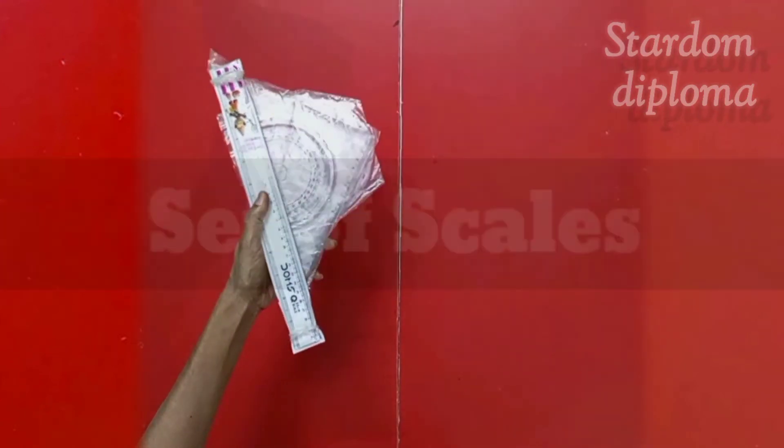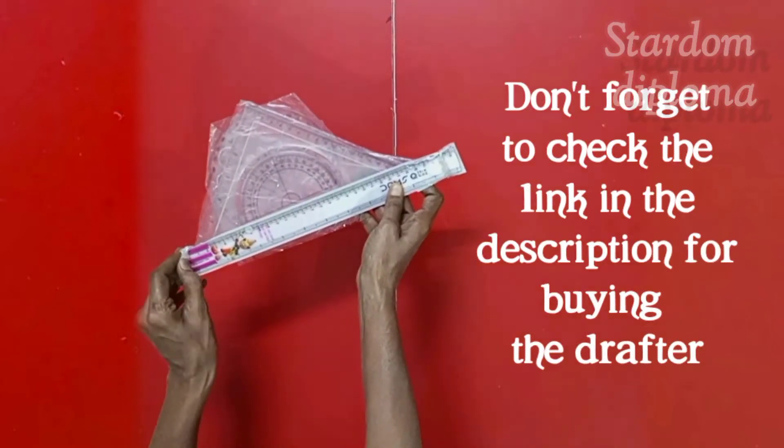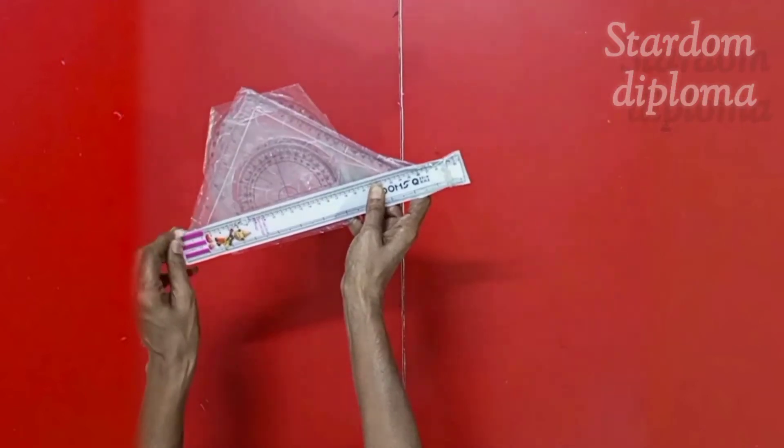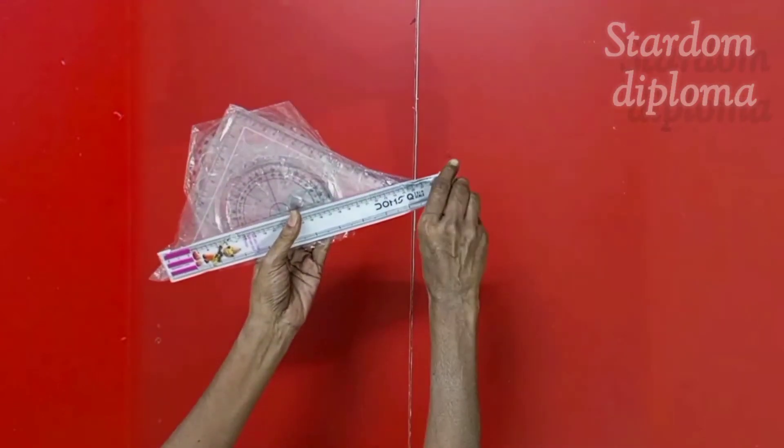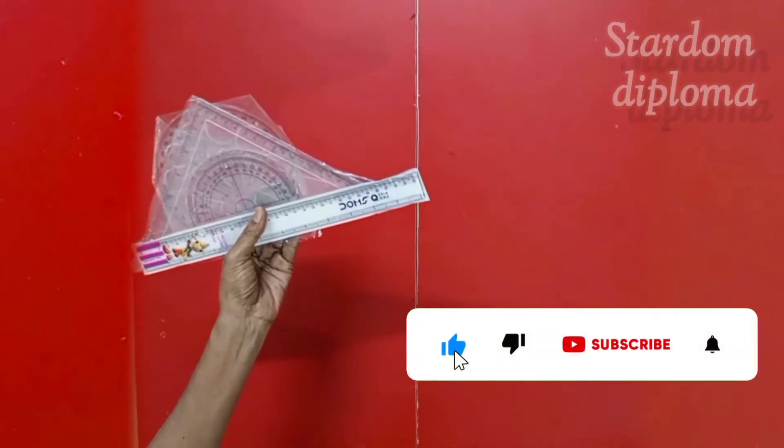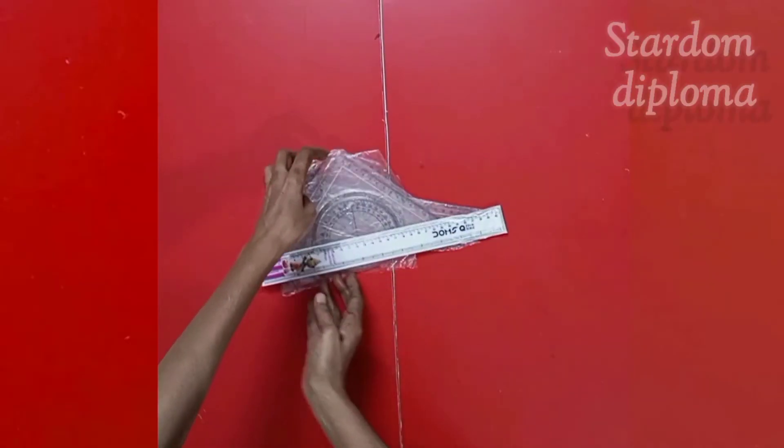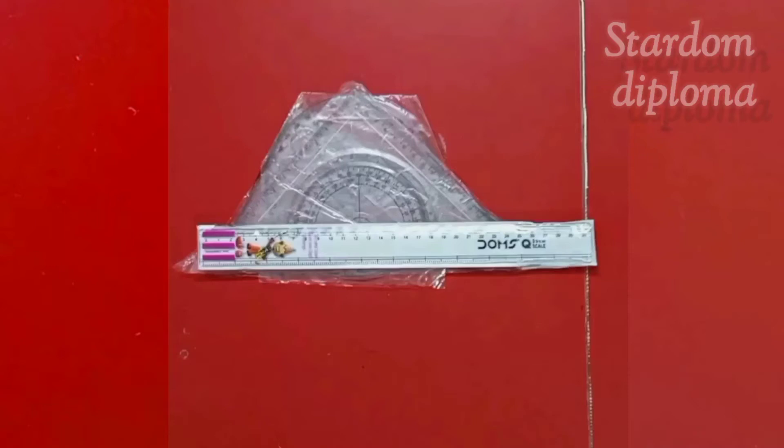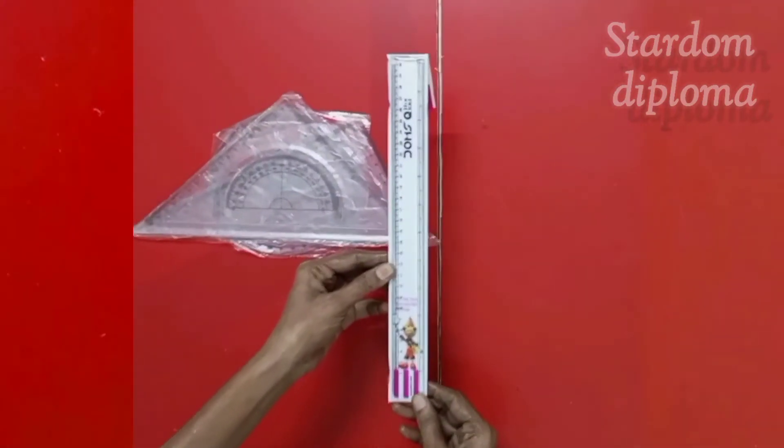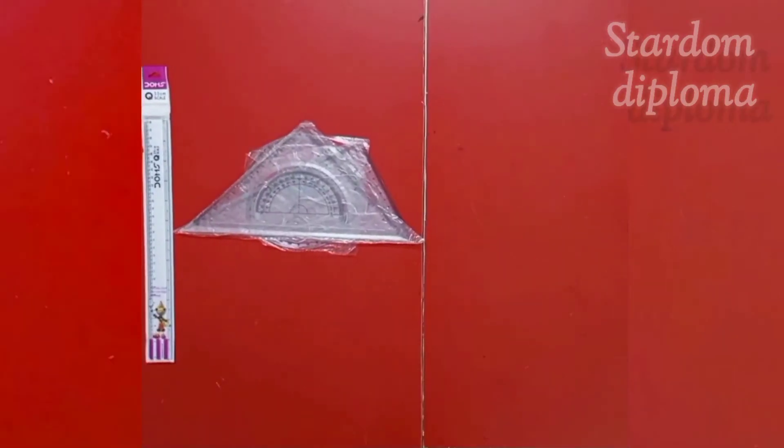First, we are going to see about the set of scales. Now let's open this and see about each type of scale. Friends, in our channel, I am going to post videos on engineering drawing. So please consider subscribing my channel. As I said, we are having four types of scales. Four different scales. The first one you are seeing is a long scale. That is 30 cm long scale we are having.